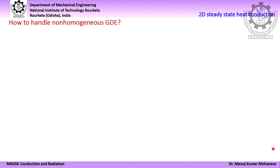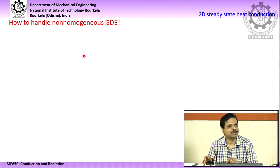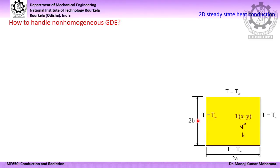Next, we will consider how to handle a problem where the governing differential equation itself is not homogeneous — because in the previous case, the governing differential equation was homogeneous but the boundary conditions were not. Now we consider a 2D heat conduction problem with dimensions 2a and 2b along the x and y directions, with constant thermal conductivity but with internal heat generation. This internal heat generation term converts the governing differential equation into non-homogeneous form. On the boundary, the condition is constant temperature T∞.